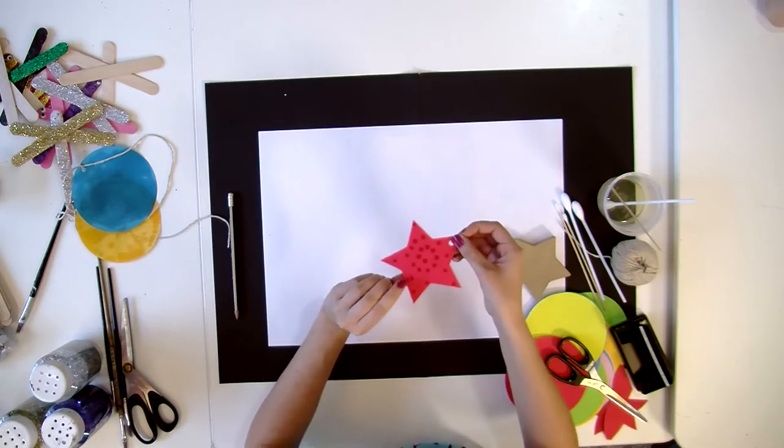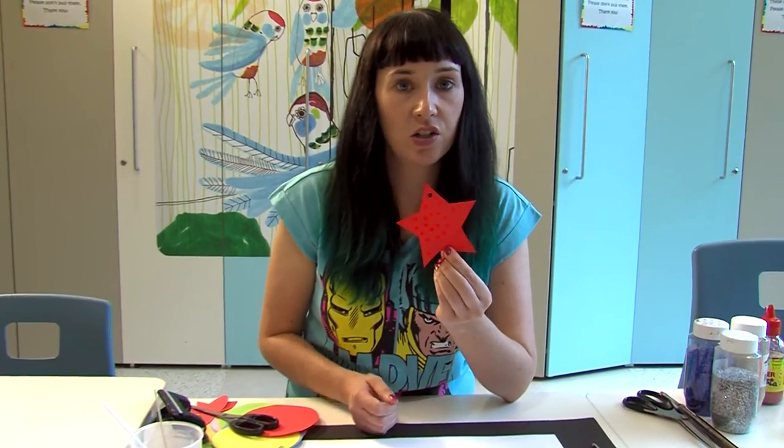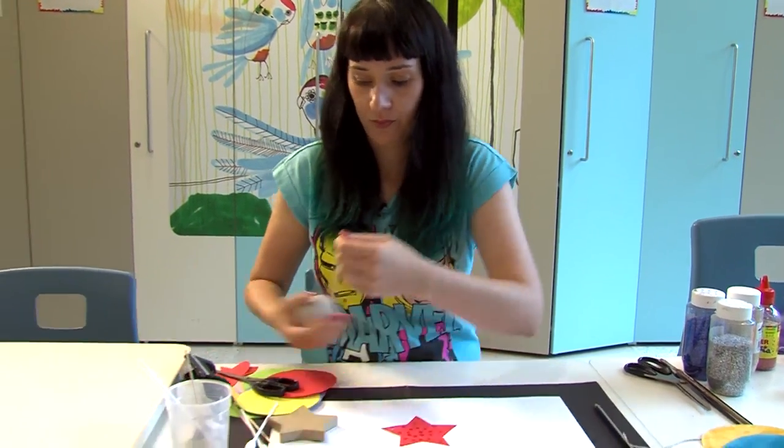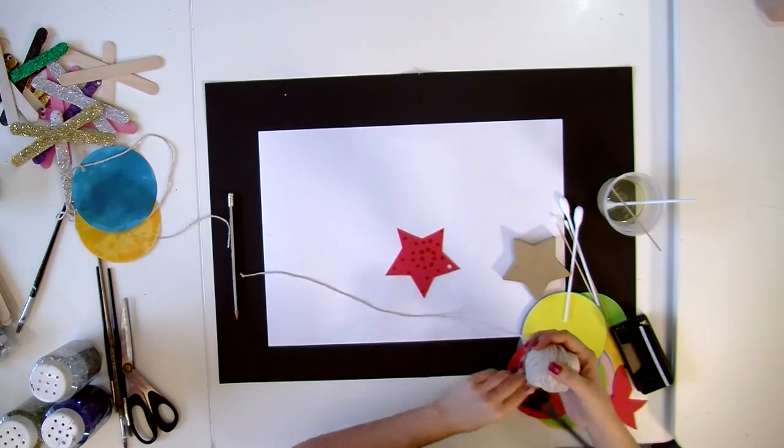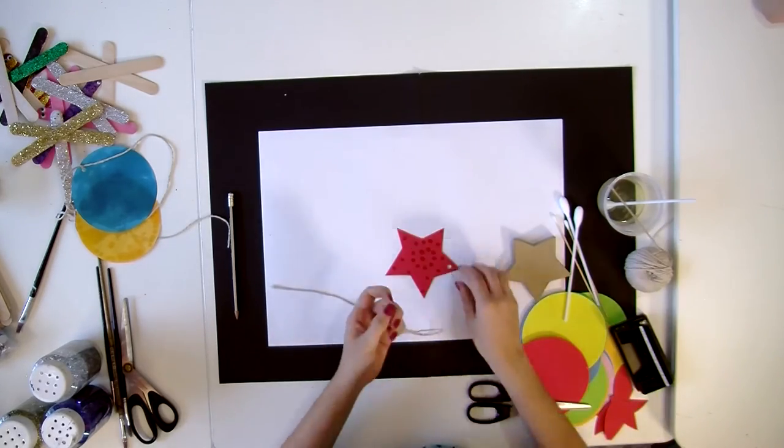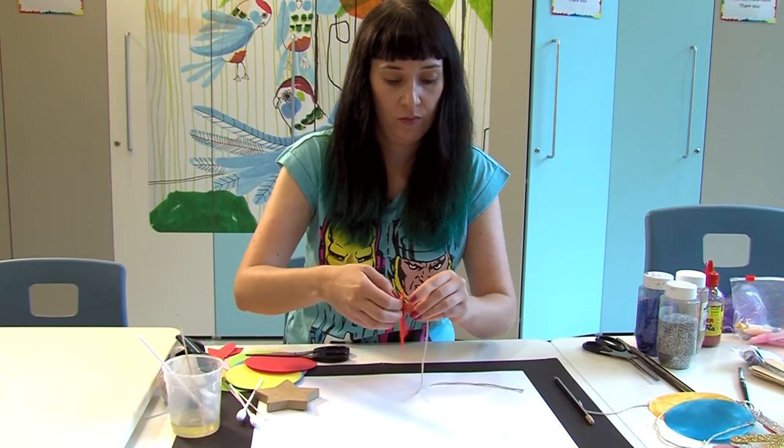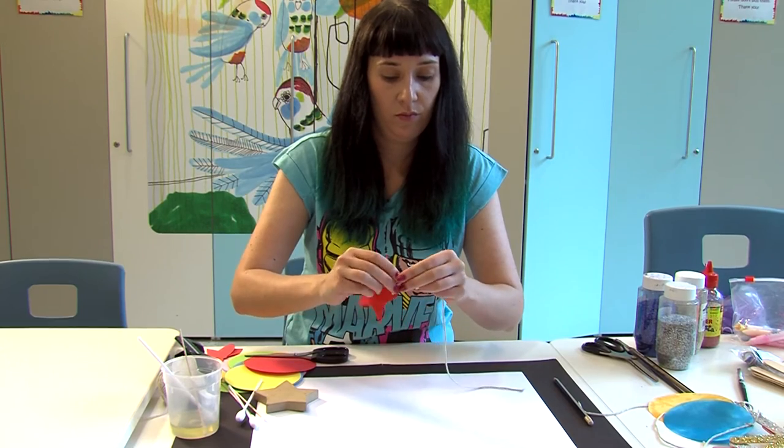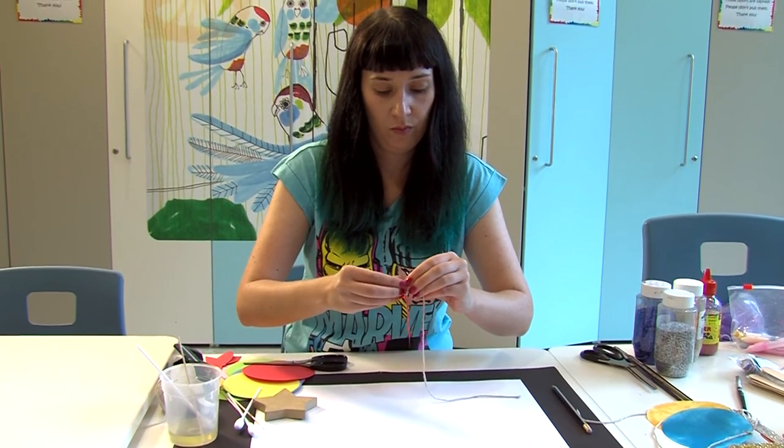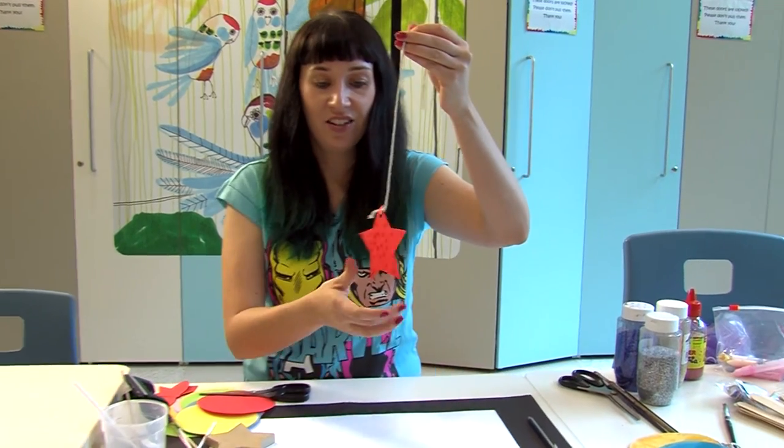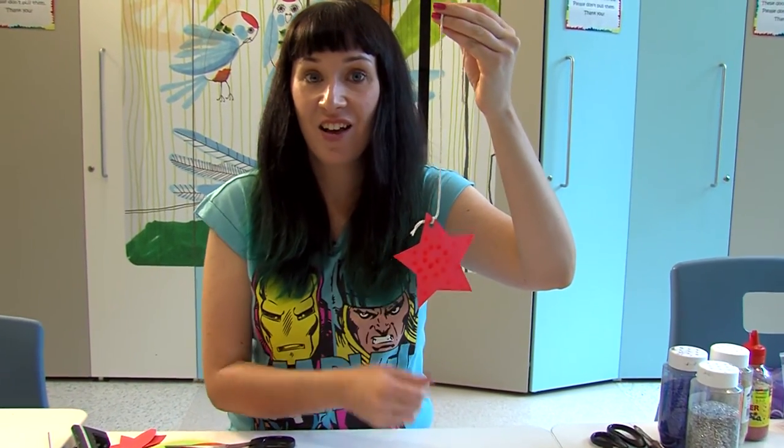So that's my design. It's a very spotty star. Next thing we're going to do is get a bit of string so we can hang it up. And there you have it—a hanging star for your window.